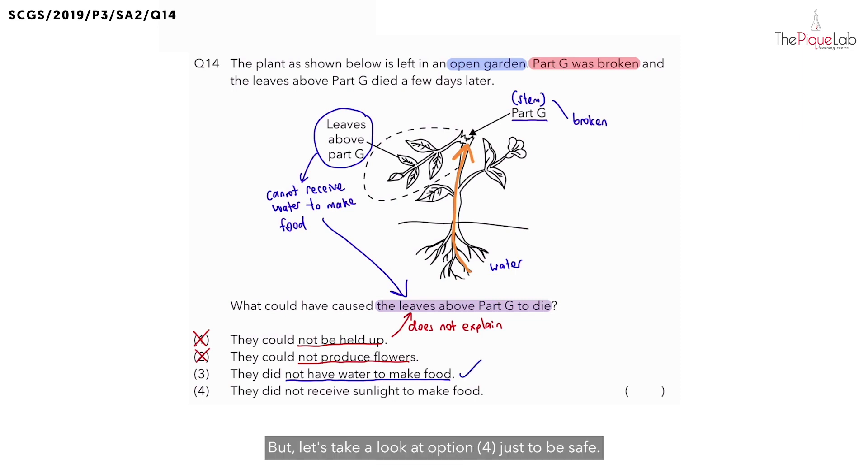For option four, they said the leaves above part G did not receive sunlight to make food. Is this statement true? To answer this, I want you to take a look at question 14. Where was this plant left in? The question already said it was left in an open garden. And in an open garden, is there going to be sunlight? Yes.